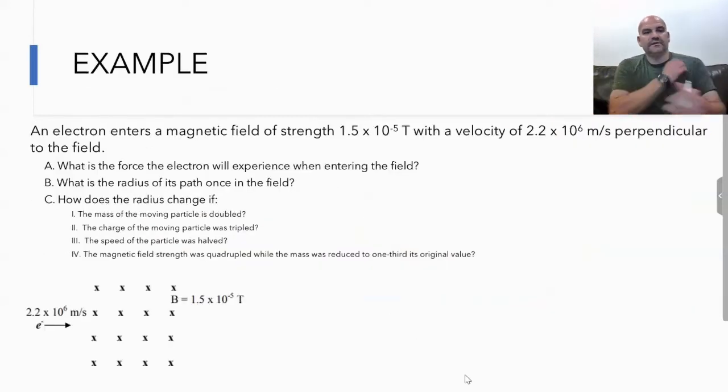Here we have an electron entering a magnetic field with a strength of 1.5 times 10 to the negative 5 Tesla and a velocity of 2.2 times 10 to the 6 meters per second, which is perpendicular to the field. You can see the diagram in the bottom left. What's the force? What's the radius? And how is the radius affected when we do different things to different pieces: the mass, the charge, the speed, the field strength?